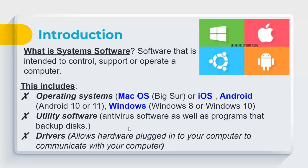Utility software includes things like antivirus software, backup systems, file compression, and disk defragmentation — tools that help maintain good performance. Drivers are needed whenever you plug in hardware like a printer, scanner, game controller, flash drive, mouse, or keyboard. Think of them as a foreign language — the computer needs software to understand how to communicate with the device. Usually the OS detects and installs the correct driver automatically, but for older or non-mainstream devices you may need to download the driver from the manufacturer's website.